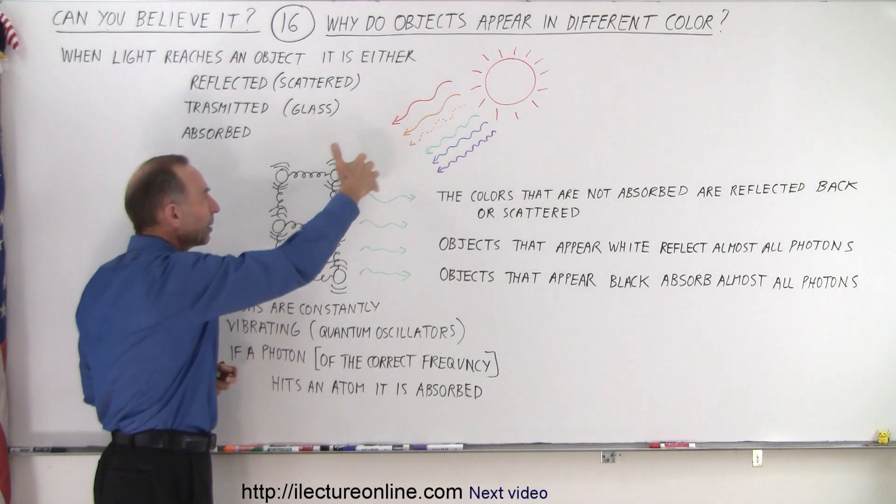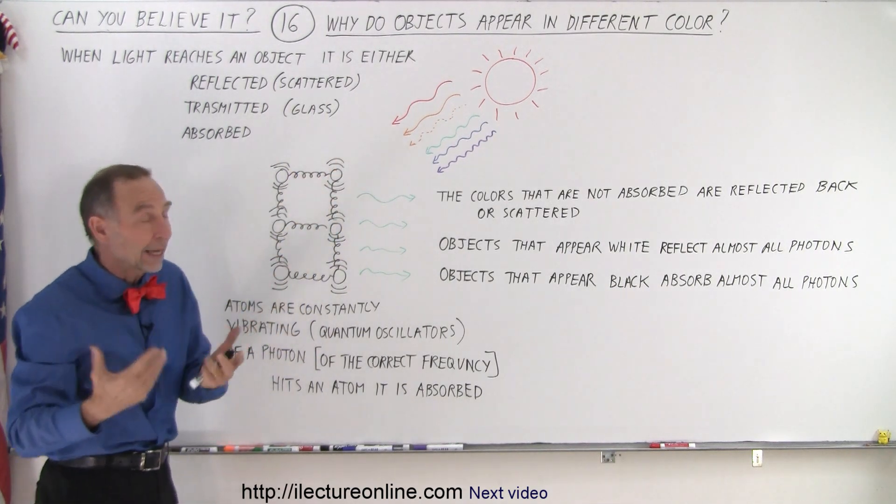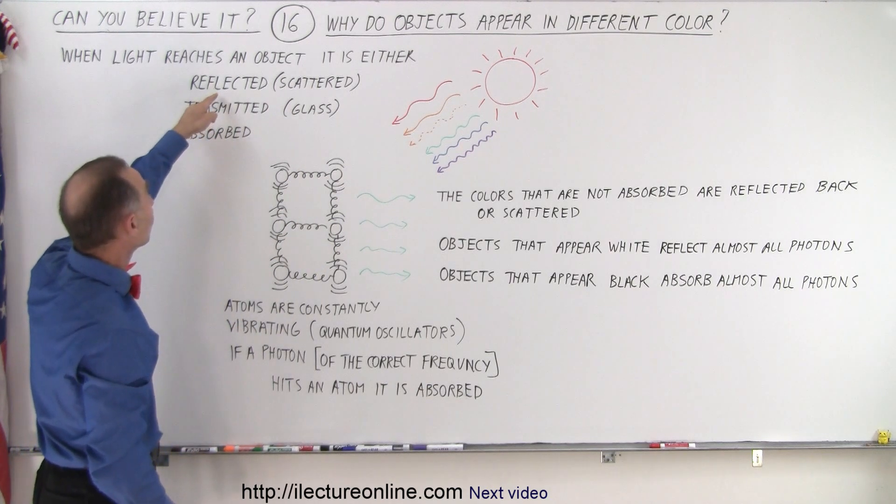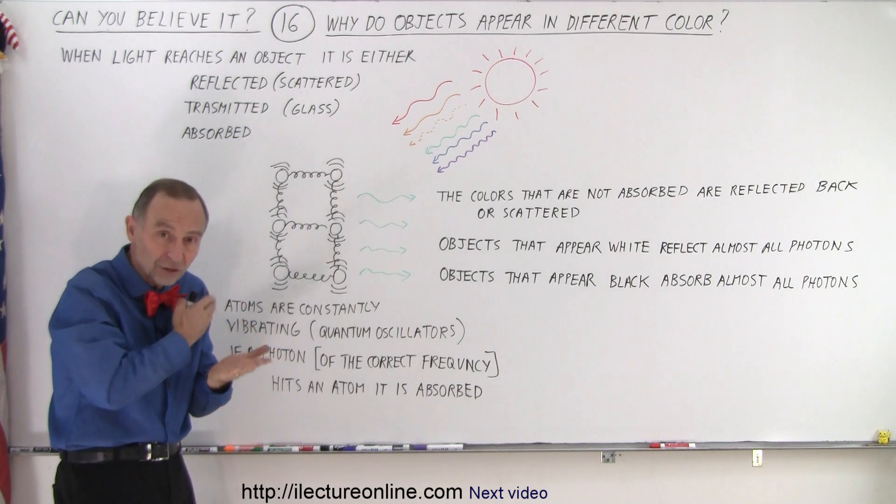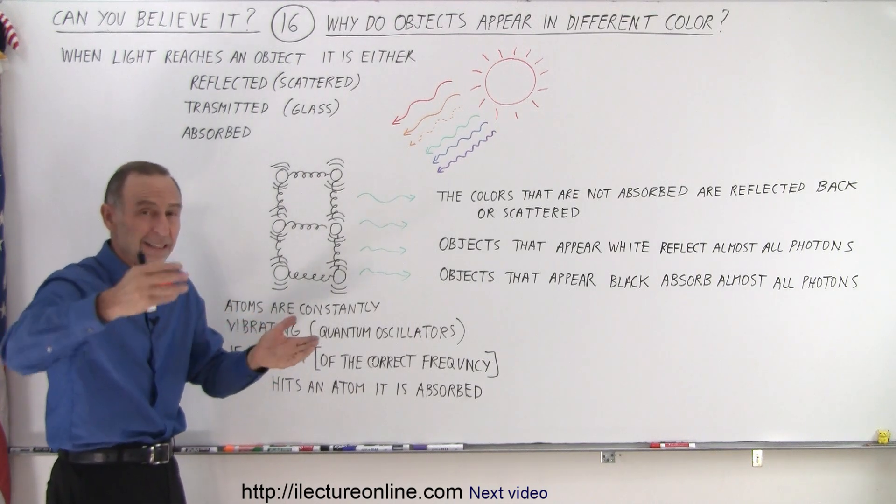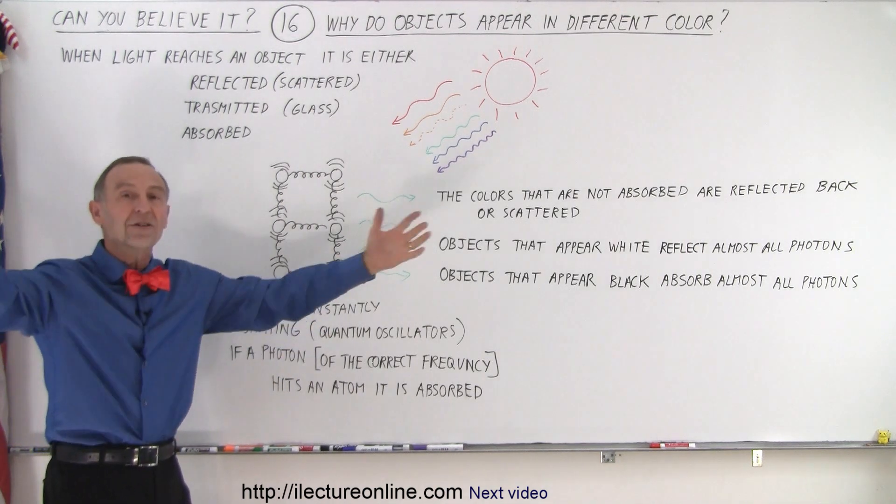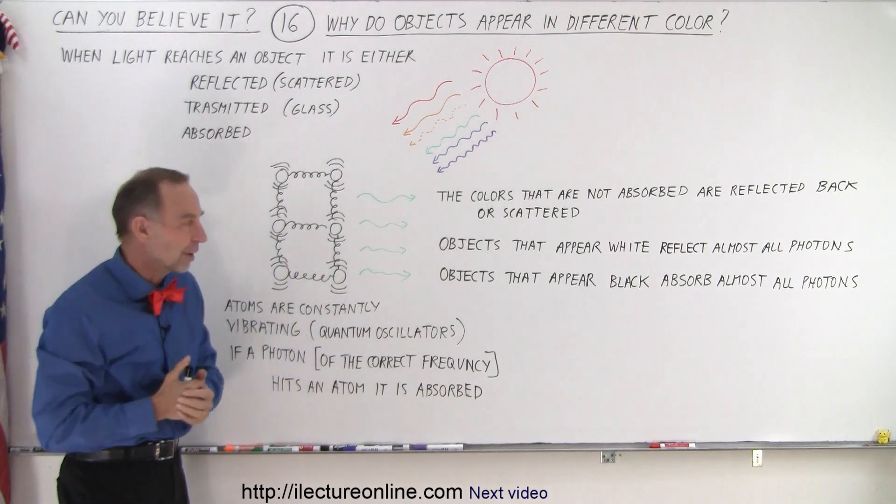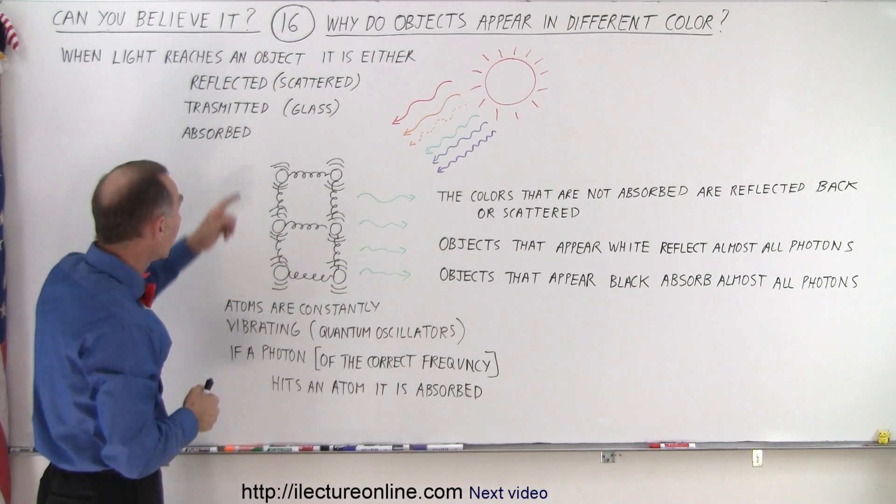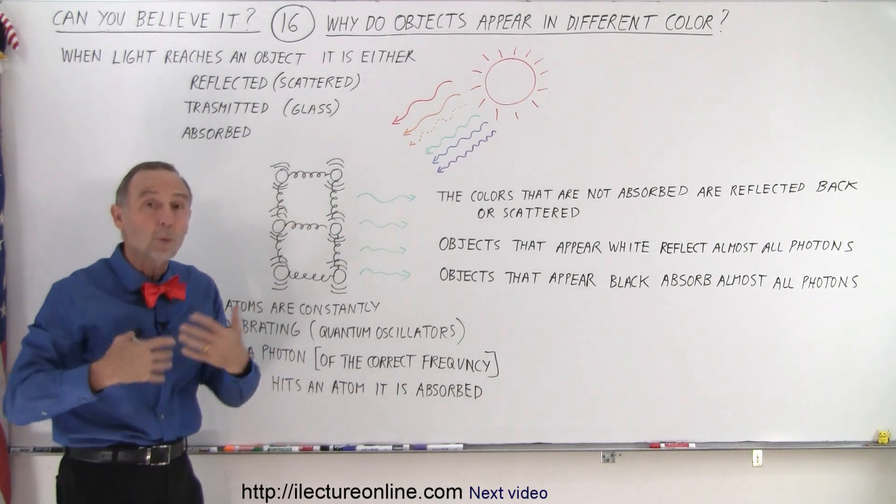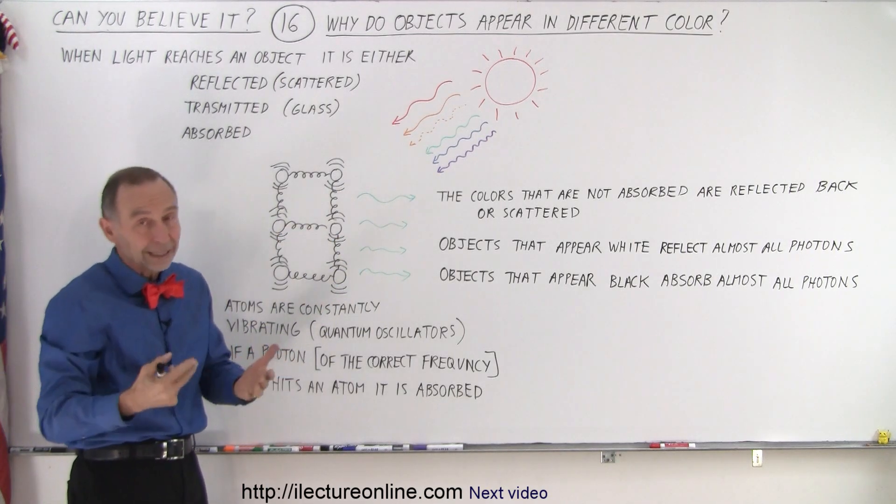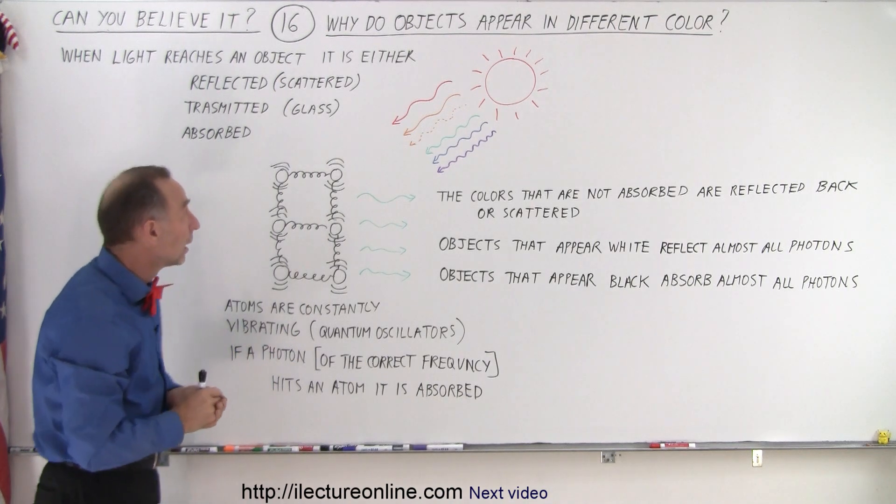And so, the incoming light will do one of three things. Either it is reflected or scattered. In some cases, it's not absorbed at all because the frequencies don't match. They're simply bounced off, either reflected like from a mirror or scattered in all directions from typically every other object. Or, the light is transmitted. Sometimes the light goes right through, like with water or glass - most of the light goes through.